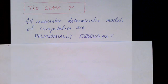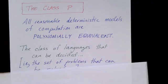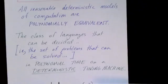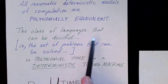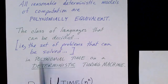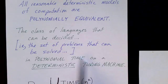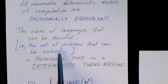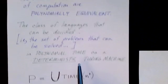Let's start by defining the class P. Remember that all reasonable models of computation are polynomially equivalent. By reasonable, we basically are including just about any model of computation that is deterministic. So we can define the class P as the class of languages that can be decided in polynomial time on a deterministic Turing machine. It's the set of problems that can be solved by deterministic Turing machines in polynomial time.